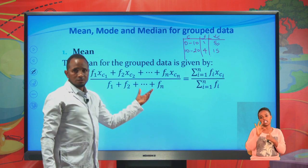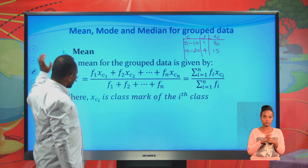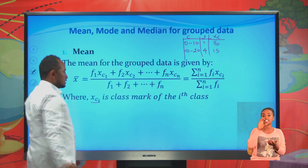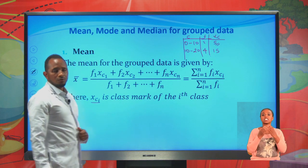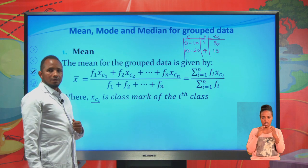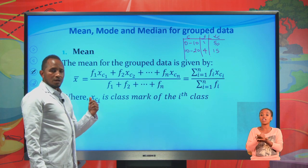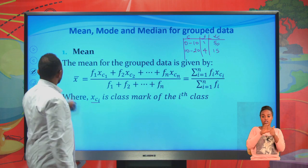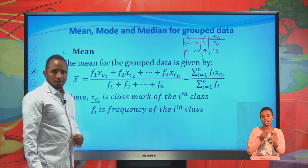XCi is the class mark, or class midpoint, of the given class. It is obtained by taking the average of the upper and lower class limits of the i-th class. Fi is the frequency of the i-th class.